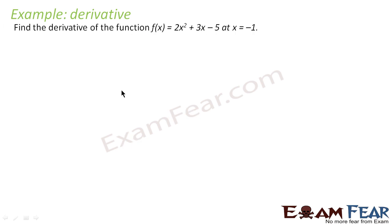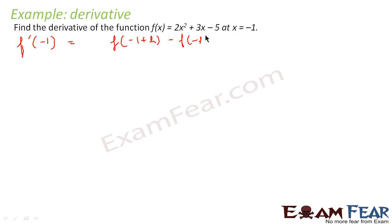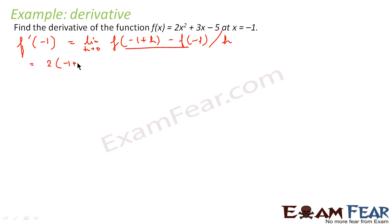So we will take one more example. We have to find the derivative of f(x)=2x²+3x−5 at x=−1. That is, we have to find f'(−1). f'(−1) is nothing but the limit of f(−1+h) minus f(−1) by h, as h tends to 0. Now f(−1+h) means we replace x by (−1+h), so this becomes 2(−1+h)² + 3(−1+h) − 5.